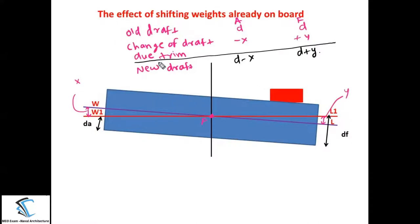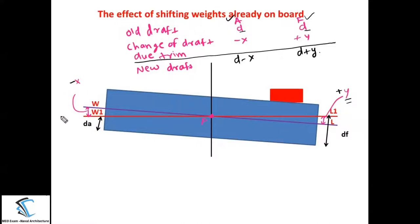The table has: old draft, then change of draft due to trim alone, then finally the new draft. A stands for aft, F stands for forward. Initially I am considering the ship is at even keel, so draft at forward and draft at aft is the same. When shifting cargo to the forward side, there will be an increment in the draft at the forward — call it plus Y — and at the aft there will be a decrement, call it minus X. Keep these sign conventions in mind.